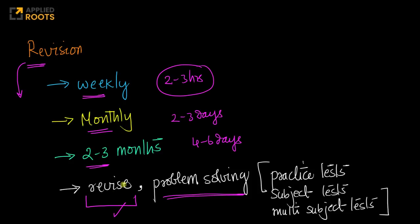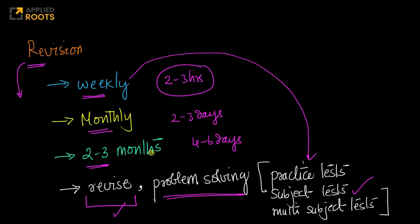After you've revised your notes, go ahead and solve problems. At the end of the week, you can solve practice tests. At the end of the month, you can solve subject tests. At the end of every two to three months, you can solve multi-subject tests. These tests are designed keeping the weekly, monthly, and quarterly revision strategy in mind — three months is roughly a quarter — so the quarterly revision strategy is built in.